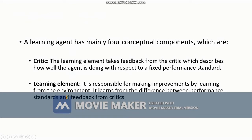A learning agent has four main conceptual components. The first is the critic. The learning element takes feedback from the critic, which describes how well the agent is doing with respect to a fixed performance standard. For each action, a fixed performance standard exists. For example, if five is the criteria and after performing the action the agent gets three, the critic will analyze the action and tell that performance is below expected, identify the mistakes, and give feedback so improvement can be made.